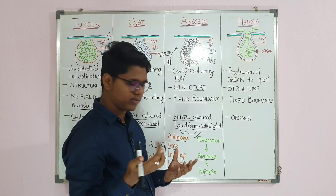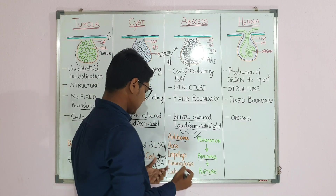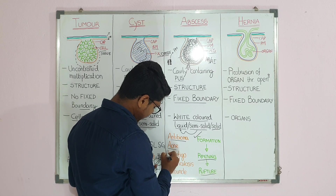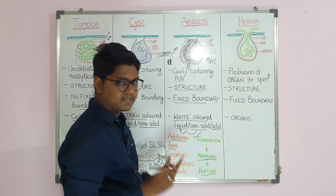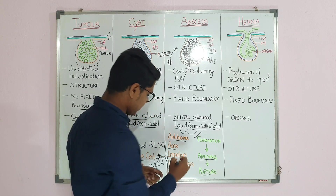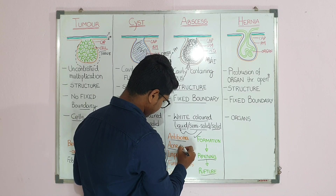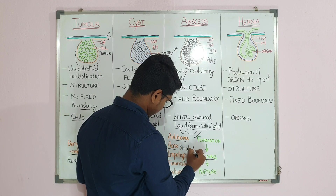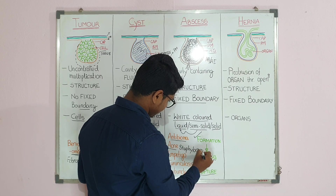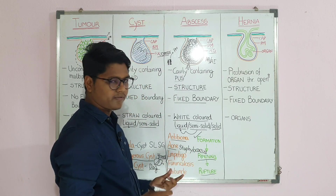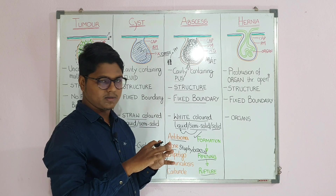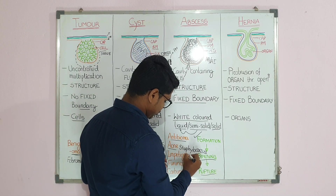Acne is basically pus formation in the sebaceous glands. Impetigo, furunculosis, and carbuncle are basically staphylococcal infections — Staphylococcus is a pus-forming bacteria. In impetigo you will find pustules all over the body.